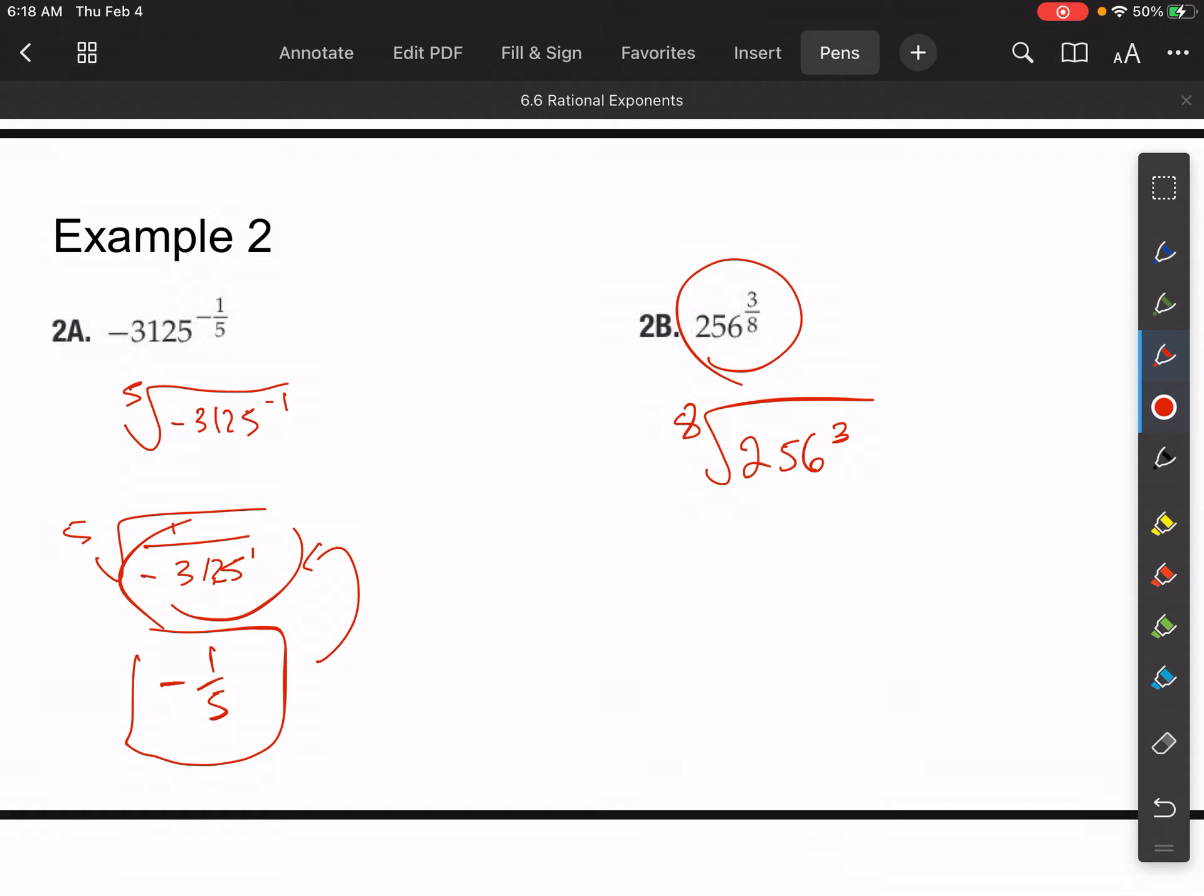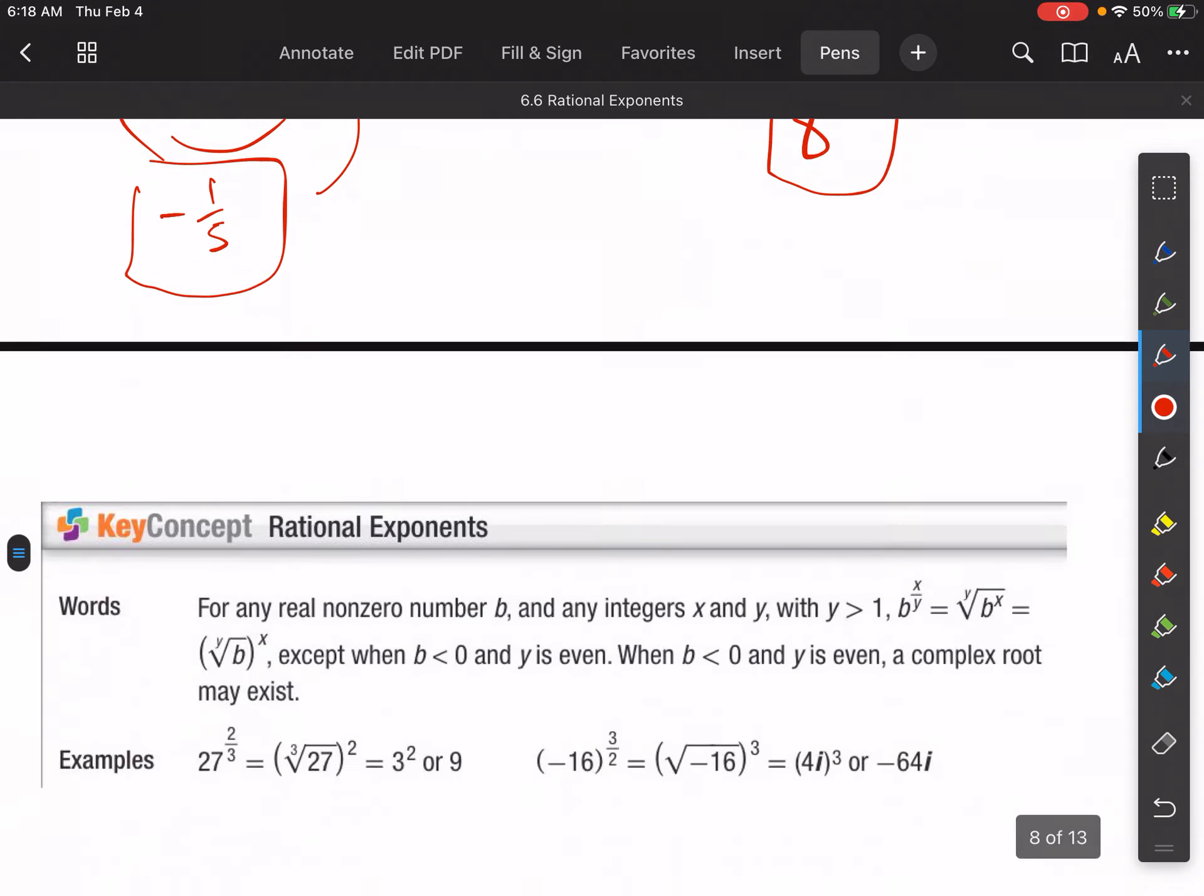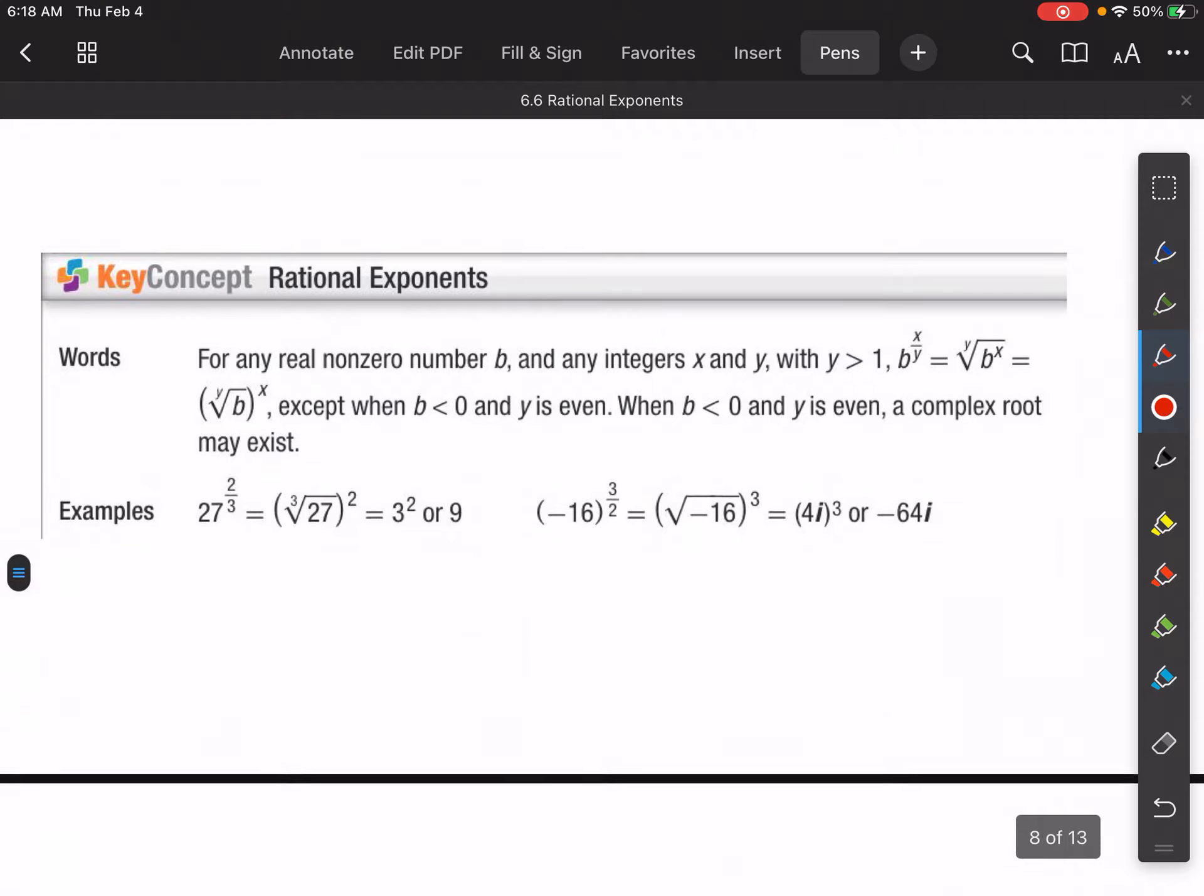So if we do that, if you take 256 to the third power, and then take the eighth root, what you'll end up with is 8. So I'll let you do that in your calculators. I'm not going to do that right now and take the time, but that's how you would solve that.